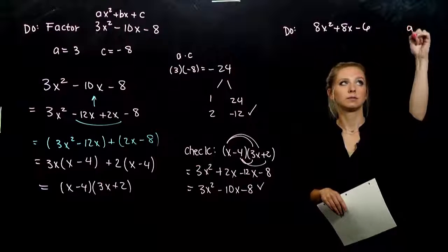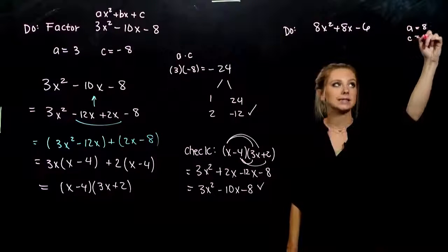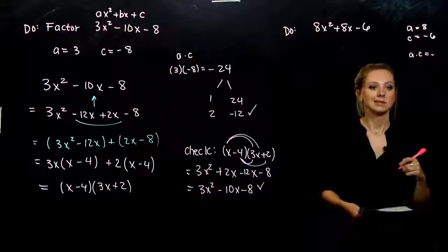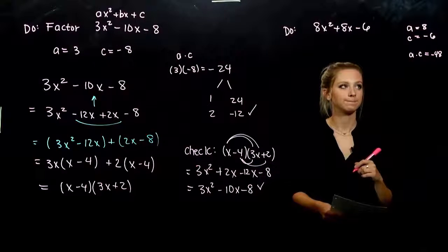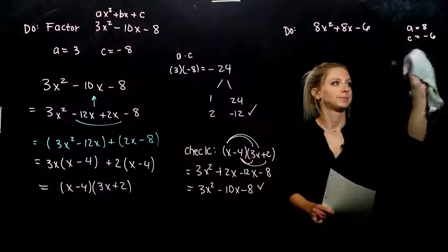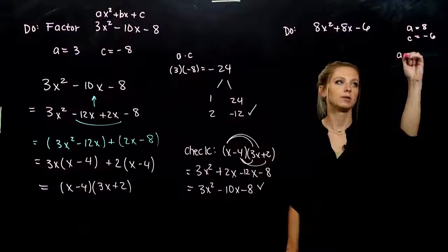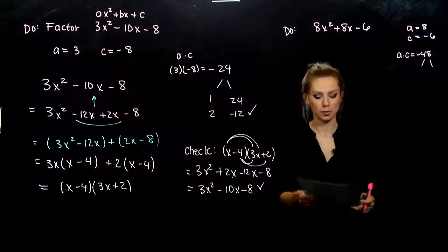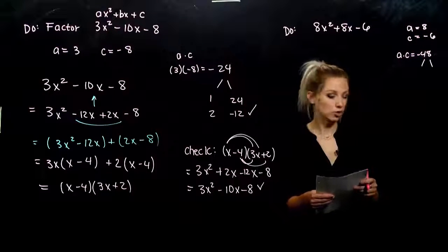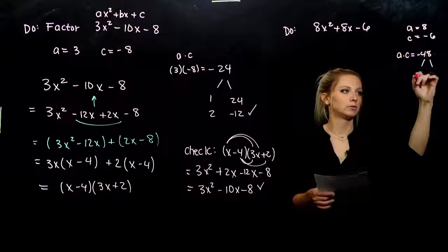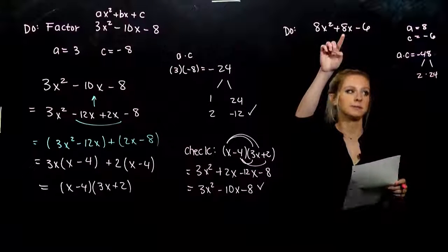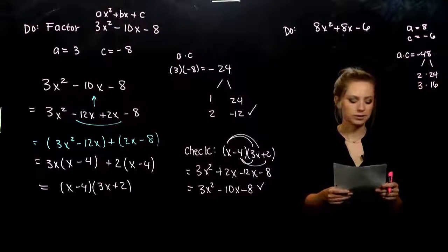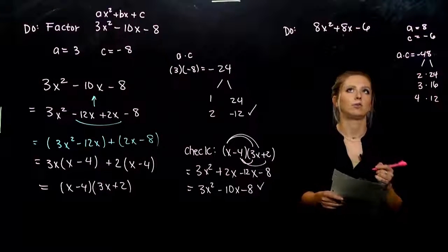My A value is 8 and C is negative 6 — the signs always go with the terms. So when we multiply A times C, we're looking at negative 48. We need to break up negative 48 into factors multiplying to negative 48 and adding to positive 8. 1 and 48 are way too big, 2 and 24, 3 and 16 — getting closer but still too big. 4 and 12 — that's going to be our winner. But we need to decide which one needs to be positive, which one negative.